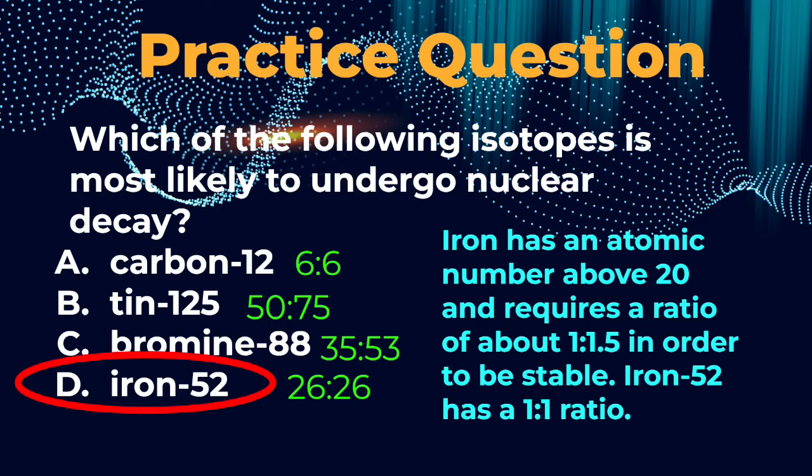So it's going to need more than one neutron per proton. And this is not the 1 to 1.5 ratio, right? It doesn't meet that. It's 1 to 1. So iron-52 is most likely to be unstable and therefore it will probably decay. And that's our answer.